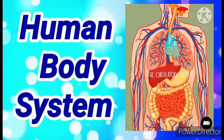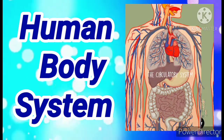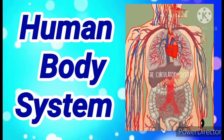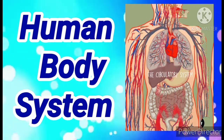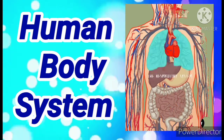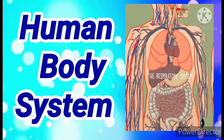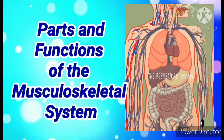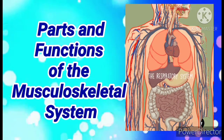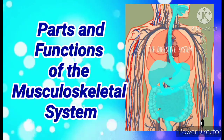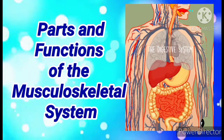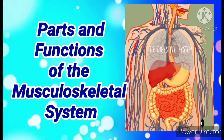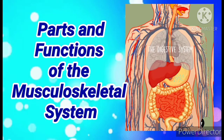We have our first topic for the second reading, Chapter 3, Human Body Systems. We are going to discuss the parts and the functions of the musculoskeletal system of our body.